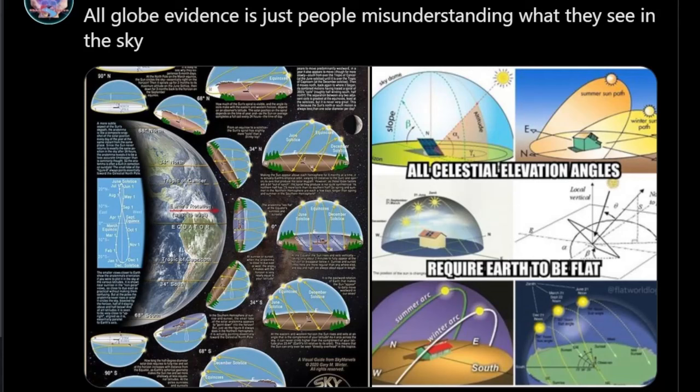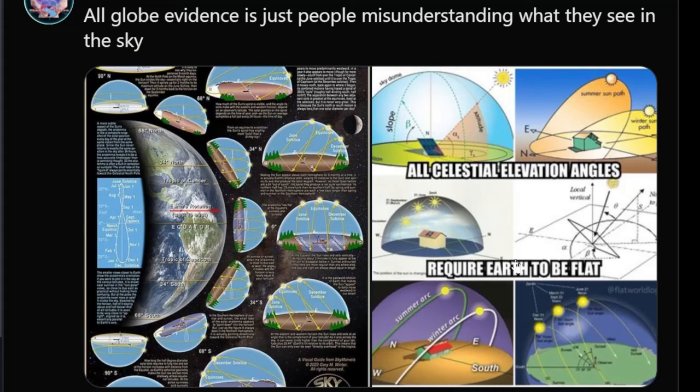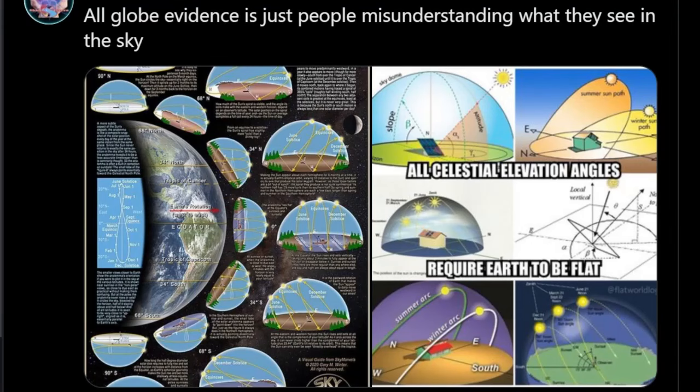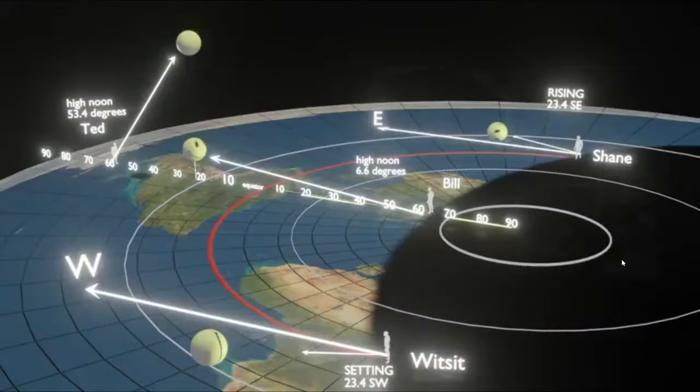Bringing us back to this post I made: all globe evidence is just people misunderstanding what they see in the sky. Everyone knows you need a flat baseline to take elevation angles to the sky. The sun's ecliptic and the arc it makes in your hemispherical vision was the baseline for creating the globe in the first place. Hundreds of years of celestial observations created the globe model to match these observations.